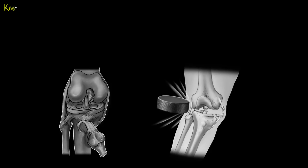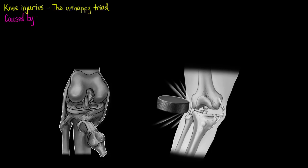Welcome to this tutorial where I'm going to be talking about a common injury of the knee that we need to know about. It is a very, very serious injury that is aptly named the unhappy triad. The unhappy triad is an injury that is usually the result of external force applied to the lateral surface of the knee, such as from a hockey puck or an enraged debt collector.